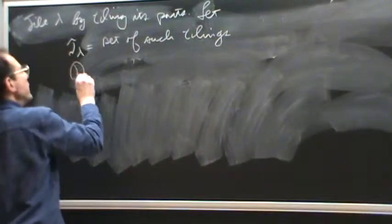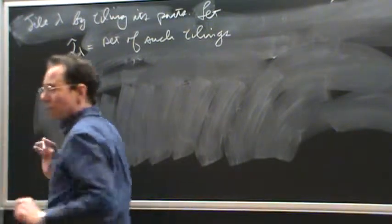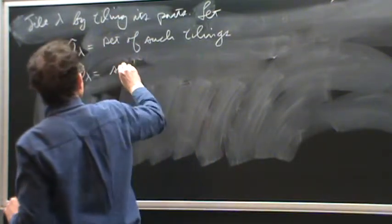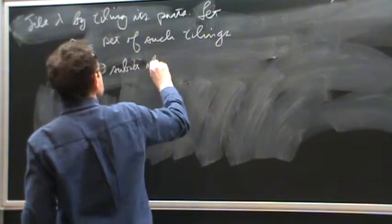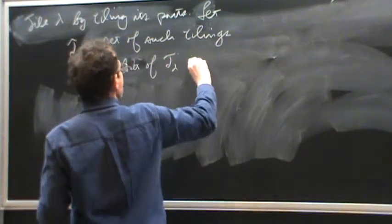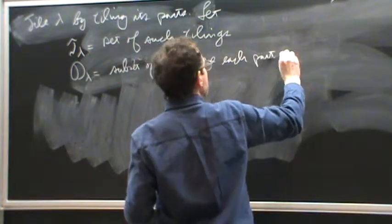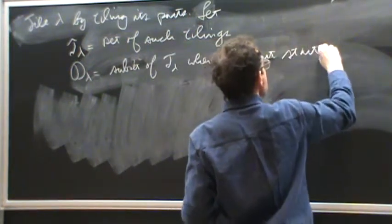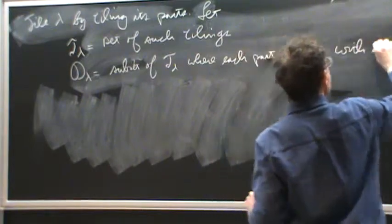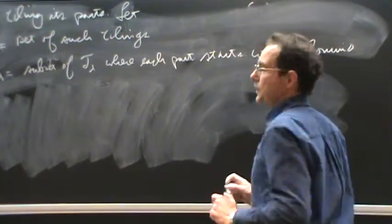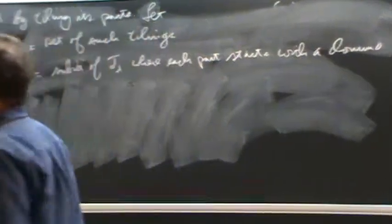And we're also going to need one other set, which I'll call D lambda. And so that's going to be the subset of T lambda where each part starts with a domino. Okay, so that's why I'm using D, D for domino.